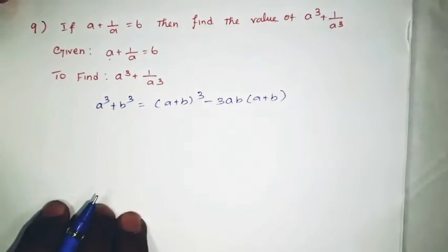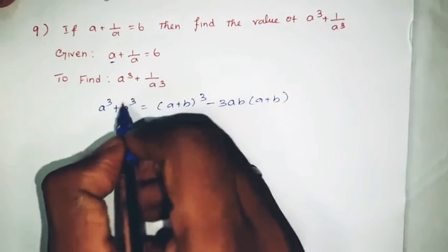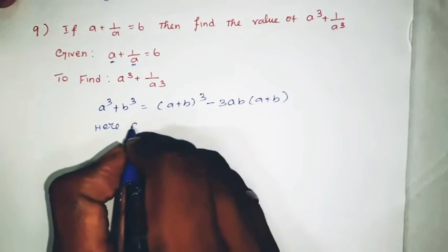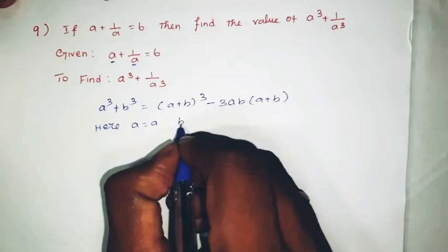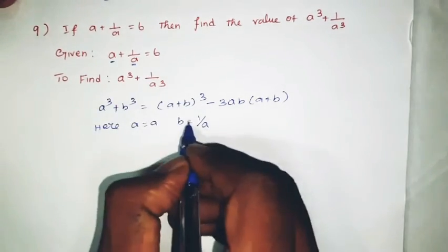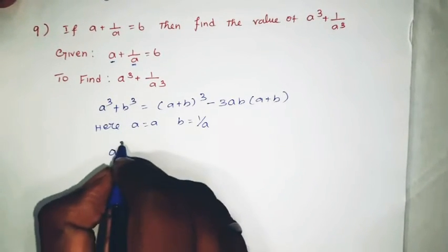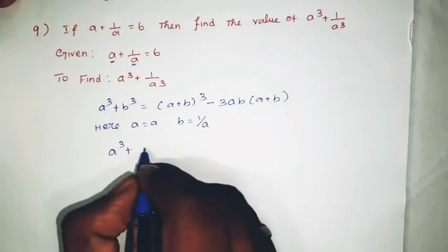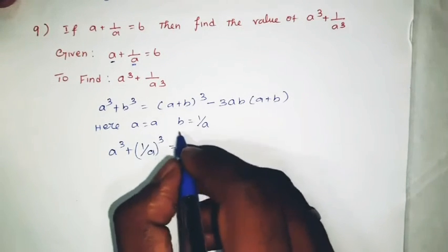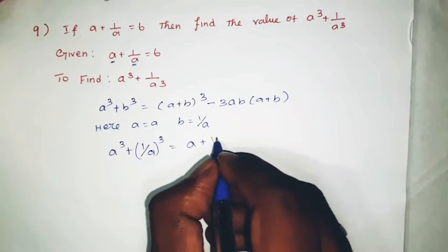So we have a plus 1 by a. Here a equals a, and b equals 1 by a. Substituting: a cube plus b cube, so 1 by a whole cube.